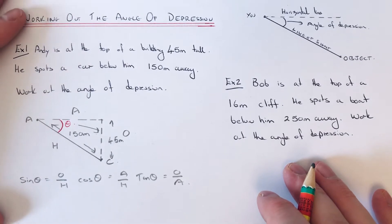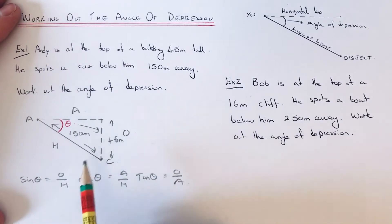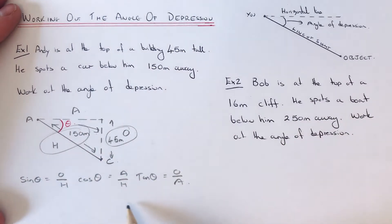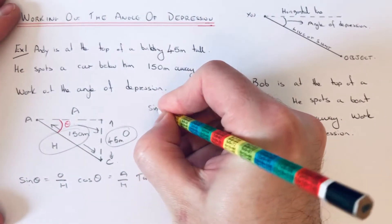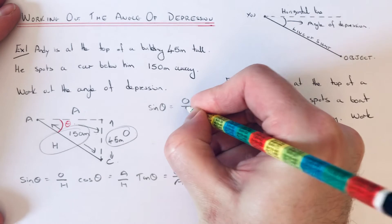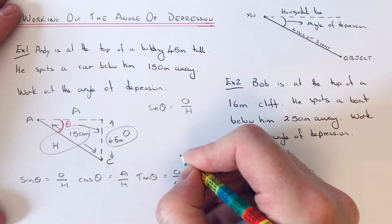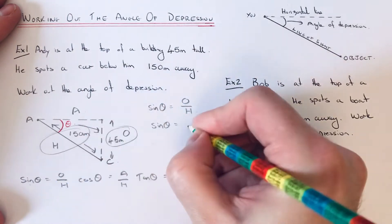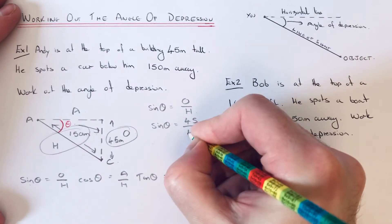So we need to select one of these formulas. We're given the opposite and we're given the hypotenuse. So the one with the O and H in is sin, so it'll be sin theta equals O over H. So if we fill these two numbers into my formula, it'll be 45 over 150.